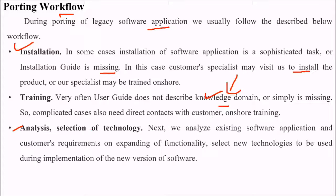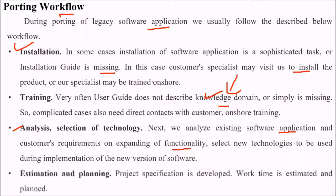Then analysis and selection of technology: we analyze the existing software application and customer requirements to expand functionality. We select new technologies to be used during implementation of the new version of the software. Finally, the estimation and planning — project specification is developed, work time is estimated, and it is planned.